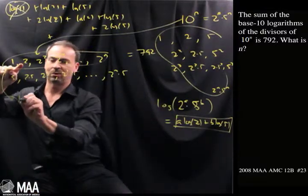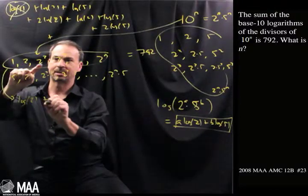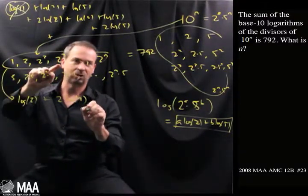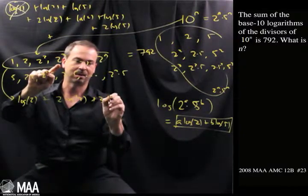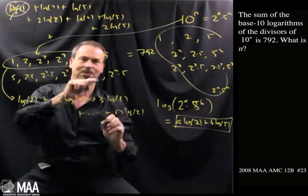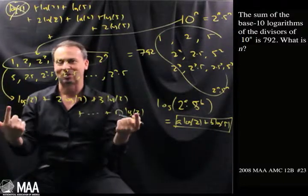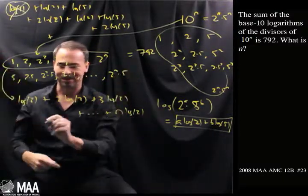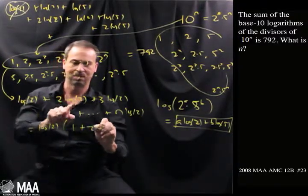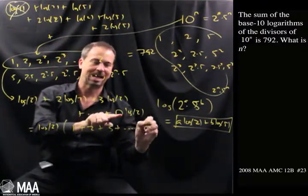Log of 1, not going to bother. Log of 2 plus log of 2 squared, the 2 will come down, 2 log 2. Log of 2 cubed, 3 will come down, plus 3 log of 2, all the way up to n log of 2. In fact, obviously there's a common factor of log of 2 because I kind of set that up. This is log of 2 times 1 of them, plus 2 of them, plus 3 of them, all the way up to n of them.